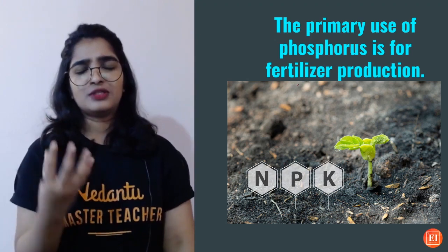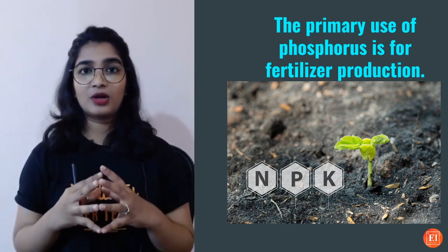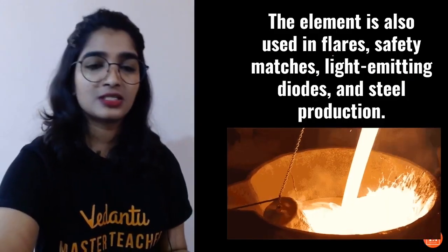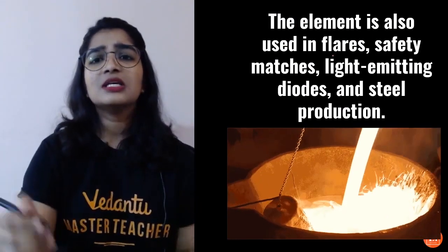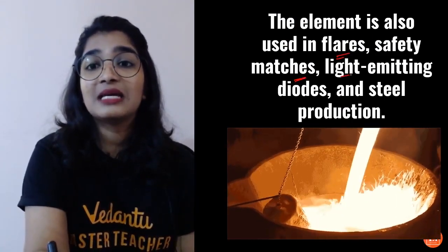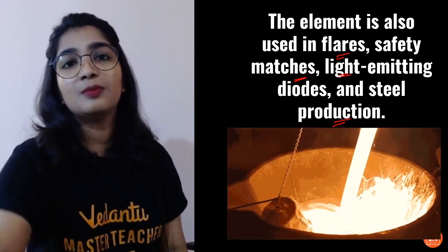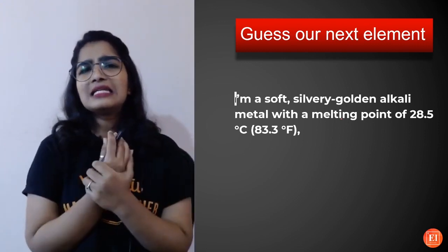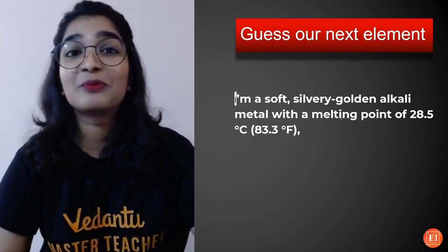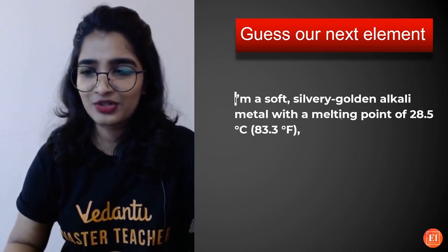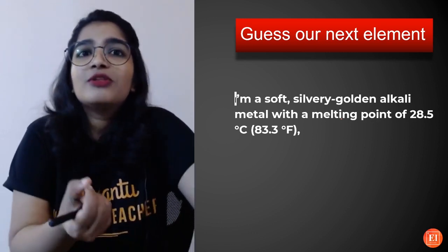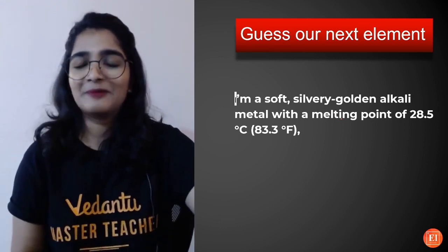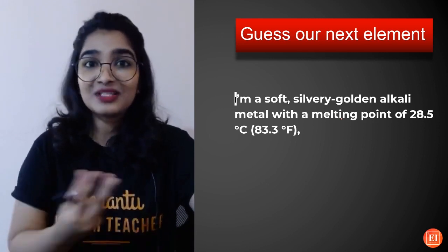Phosphorus is very important in agriculture — it is used as a fertilizer. It is also used in flares, safety matches, light-emitting diodes, and steel production. That covers the key facts about phosphorus. Many of these facts were unknown even to me — I did research and was genuinely amazed. Through this series, even I am learning a lot.